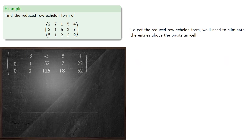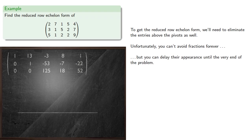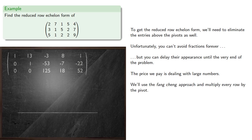To get the reduced row echelon form, we need to eliminate the entries above the pivots as well. Unfortunately you can't avoid fractions forever, but you can delay their appearance until the very end of the problem — the price we pay is dealing with large numbers. We'll use the Fang Chang approach and multiply every row by the pivot, so we'll multiply the first and second rows by 125.